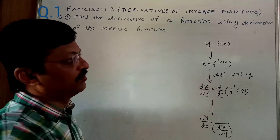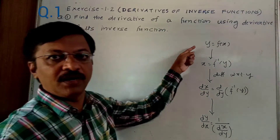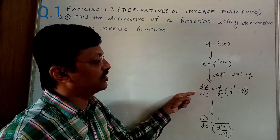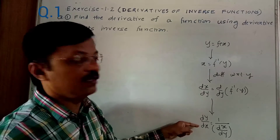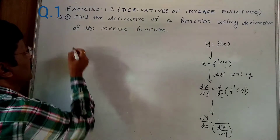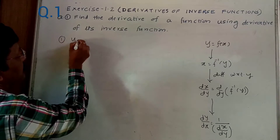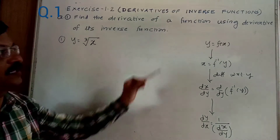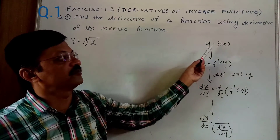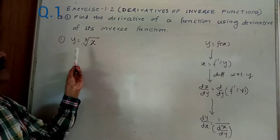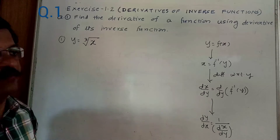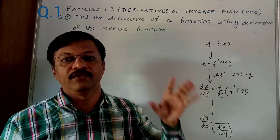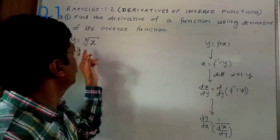So y = f(x) is given, take the inverse function of that function, find the derivative of that inverse function, and using this derivative of the inverse function find the derivative of the original function. Let's take example 1: y = cube root of x. The given function is y = f(x) and in particular y = cube root of x.